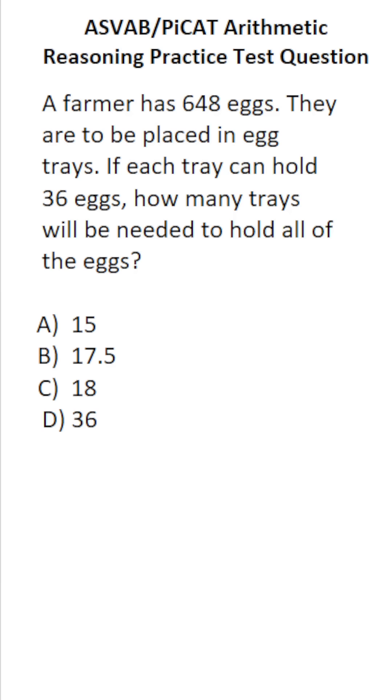So in this case, we're going to do some simple long division. We're going to divide the number of eggs, 648, by the number of eggs each tray can hold, which is 36. We're going to do the long division accordingly. So this is 648 divided by 36.